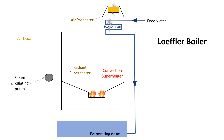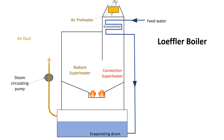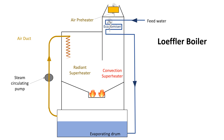At the initial starting phase of the low floor boiler, the superheated steam is required to the evaporating drum. So when the superheated steam is mixed in the evaporating drum, then a dry saturated steam is formed and it is forced circulated by the steam circulating pump to the radiant superheater.